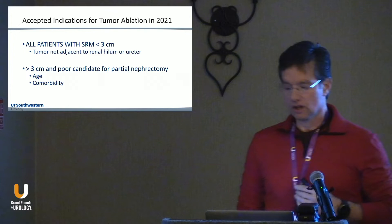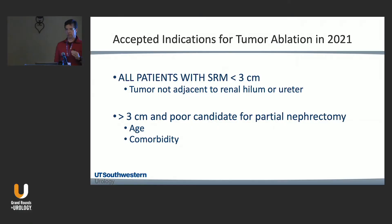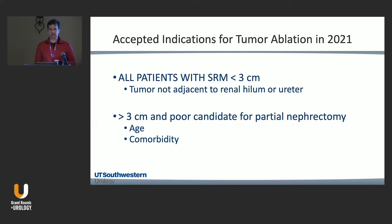In 2022, guidelines are clear: all patients with tumors less than three centimeters are candidates for ablation, and this must be part of your informed consent and shared decision making. If you are not sharing this with your patient, you are not maintaining standard of care. A tumor adjacent to the hilum or seven centimeters — those are not candidates — but less than three centimeters, you have to discuss ablation as an option.